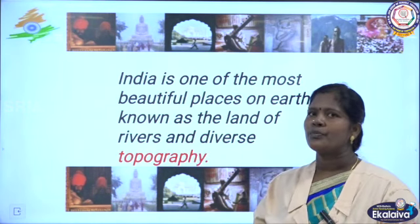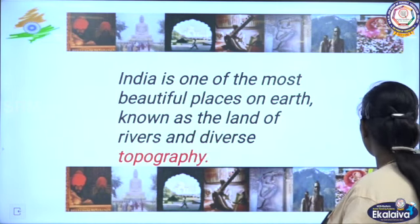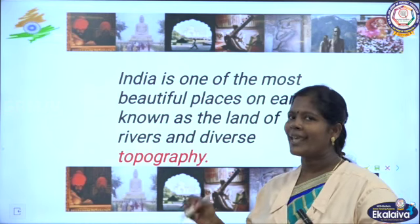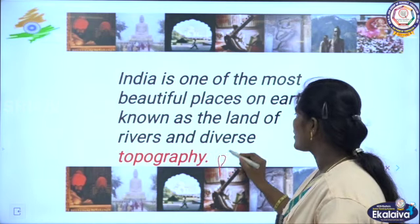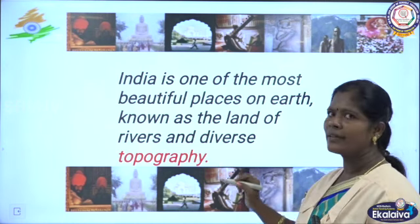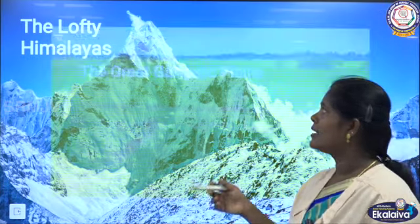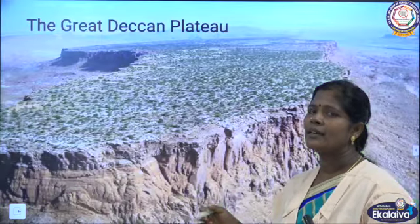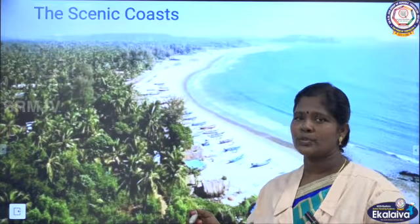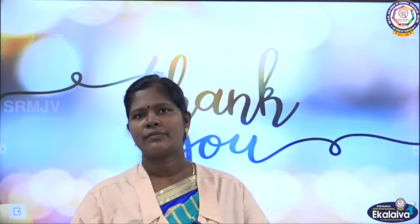India is one of the most beautiful places on earth, known as the land of rivers and diverse topography. Topography means the arrangement of physical features of an area, also called geographical features. The geographical features of India include the lofty Himalayas, the great Gangetic Plains, the great Deccan Plateau, the great Indian Desert, and the scenic coast. These will be covered in detail in the next session.